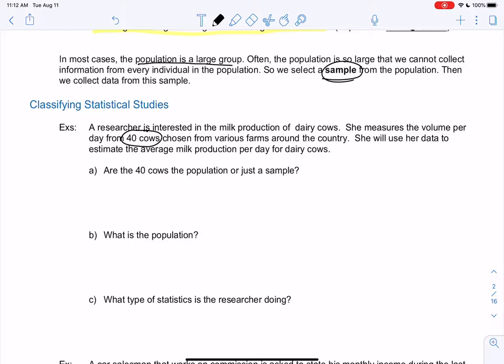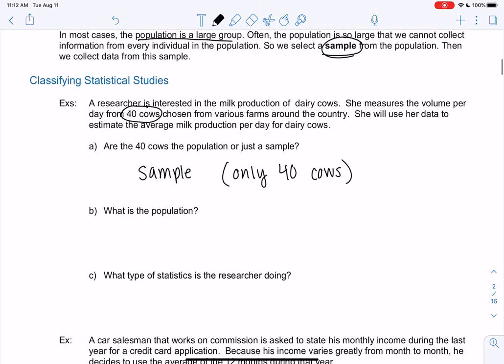So are the 40 cows a sample or a population? So I would say they're just a sample, right? 40 cows doesn't represent all cows, so it's only 40 cows. And then the population is then all the cows that we're making conclusions about. So it would probably just be all dairy cows here.